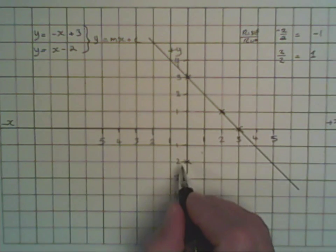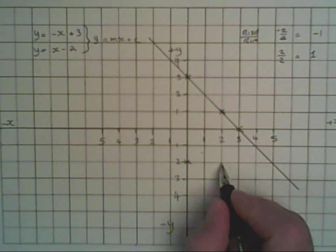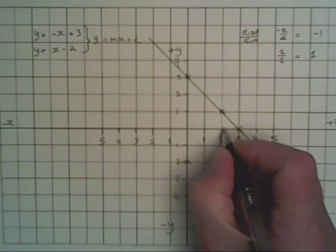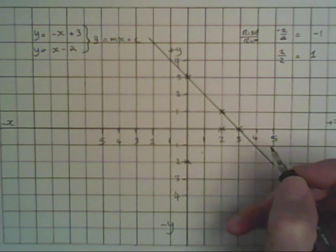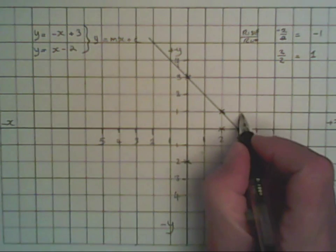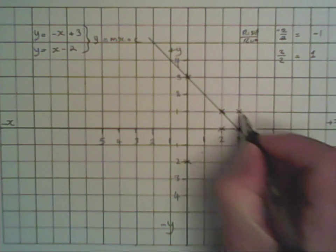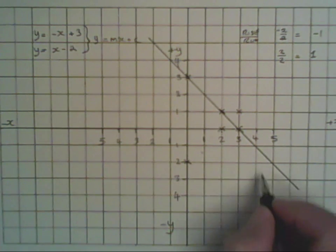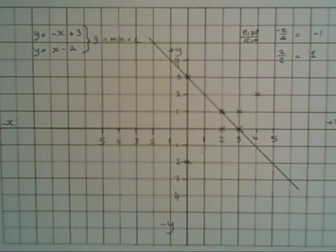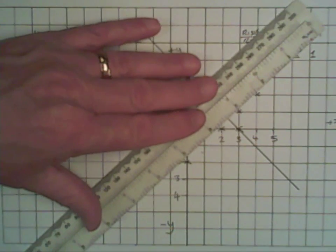So now we need 2 goes across to plus 2, which is there. And then we could do 3 and 3, which is there. And then we could say 4, which is there, and so on. And now I can successfully draw in the line.